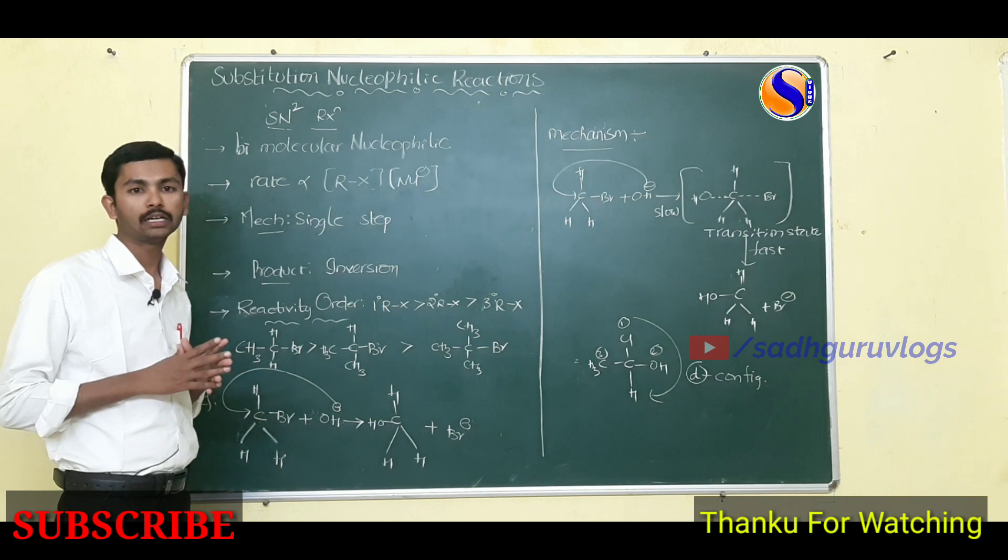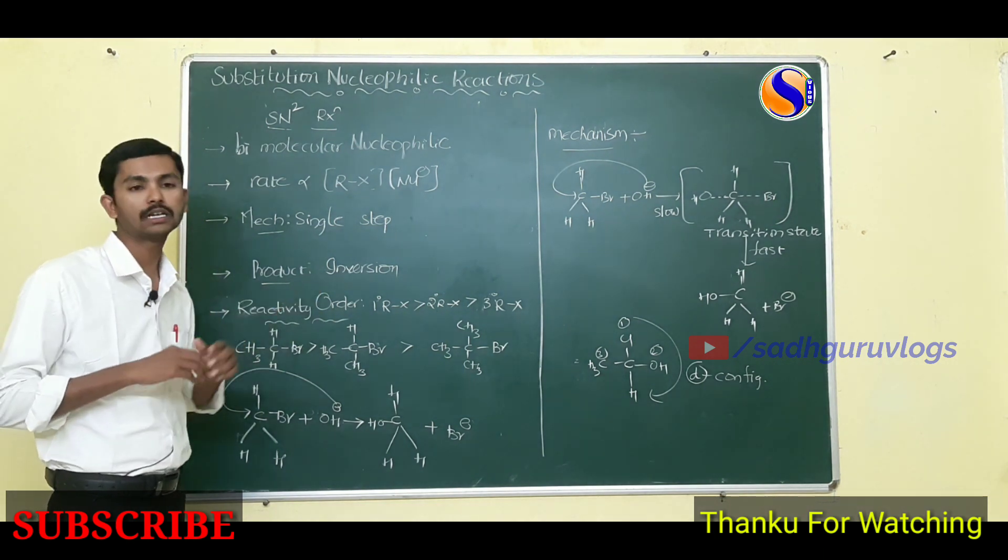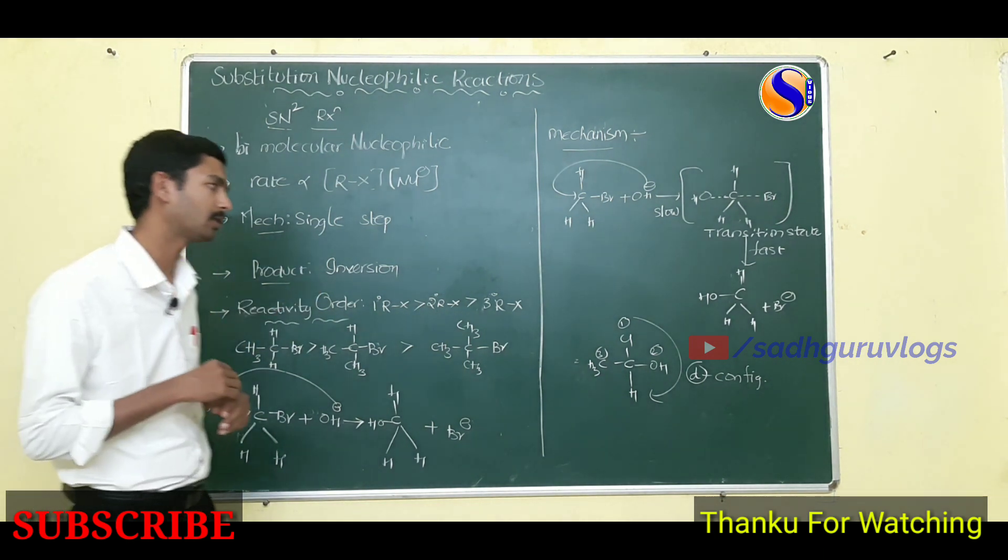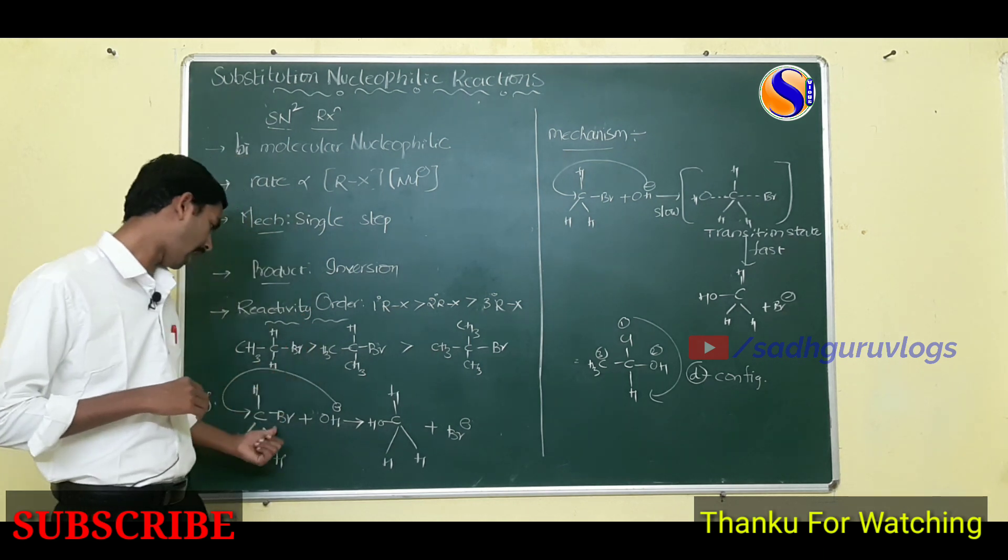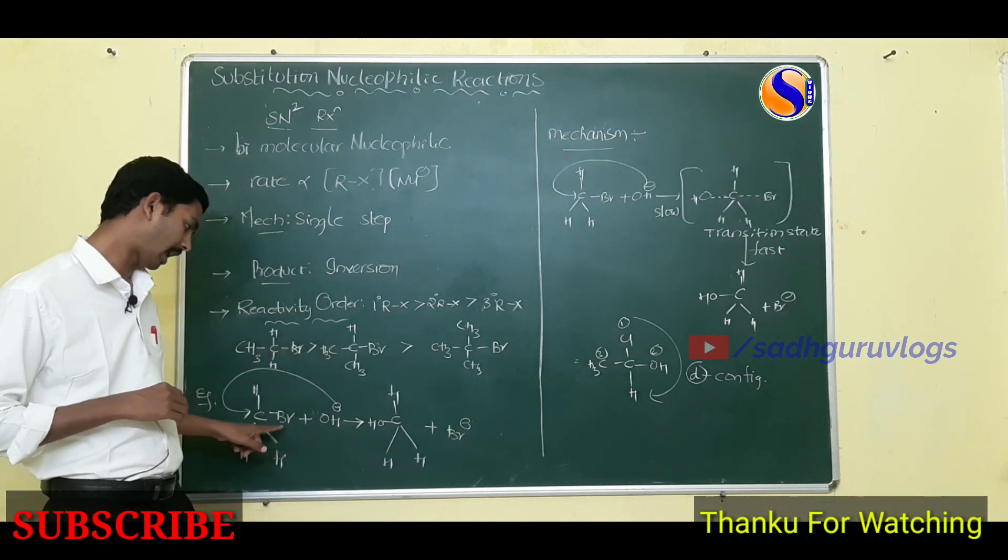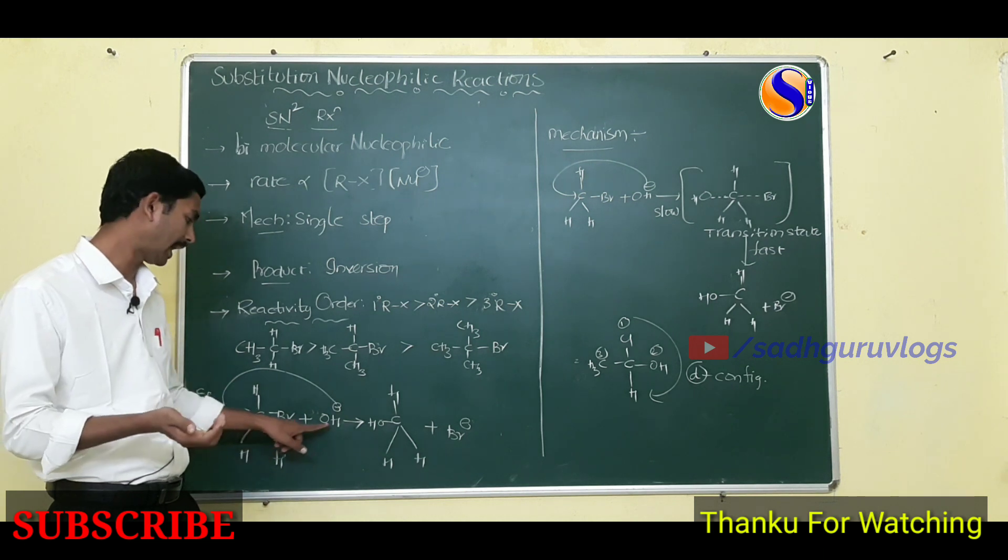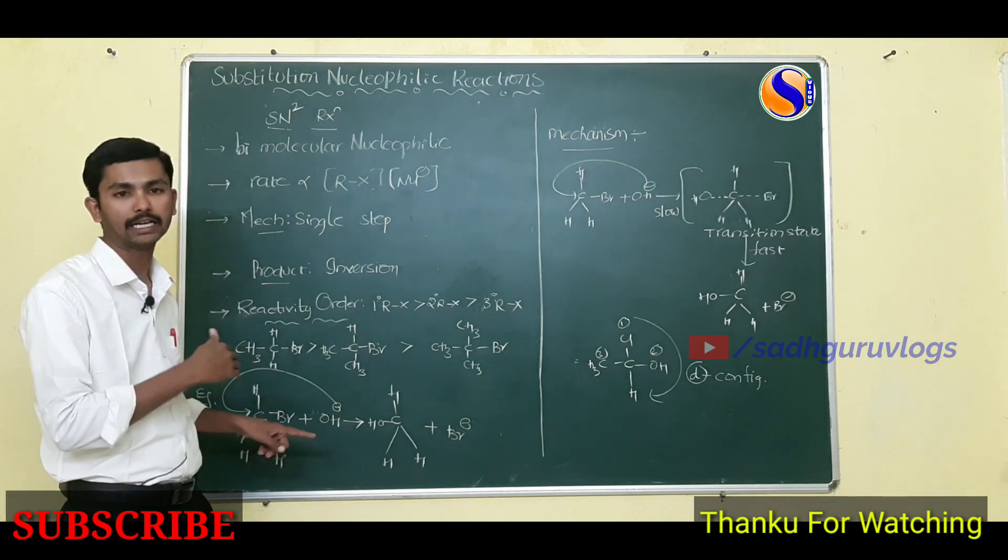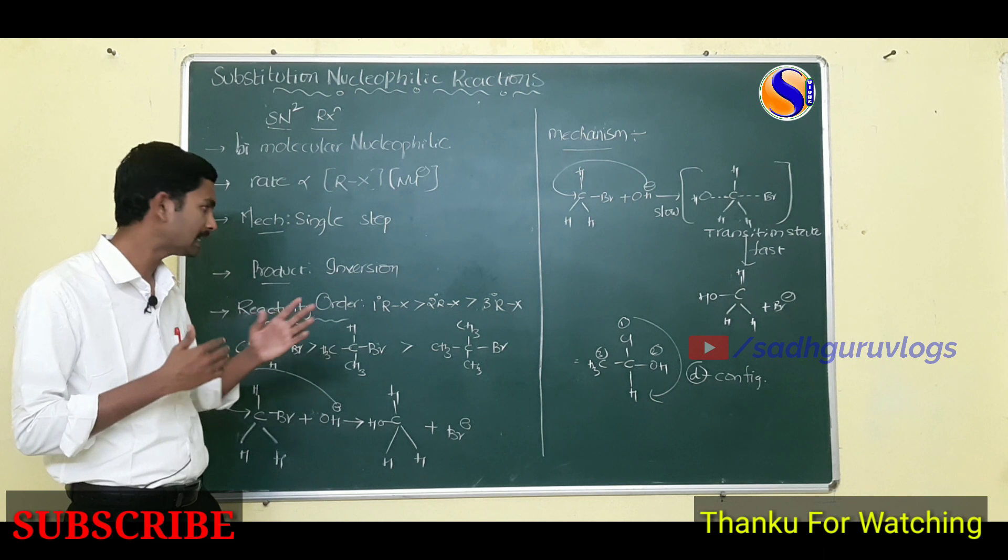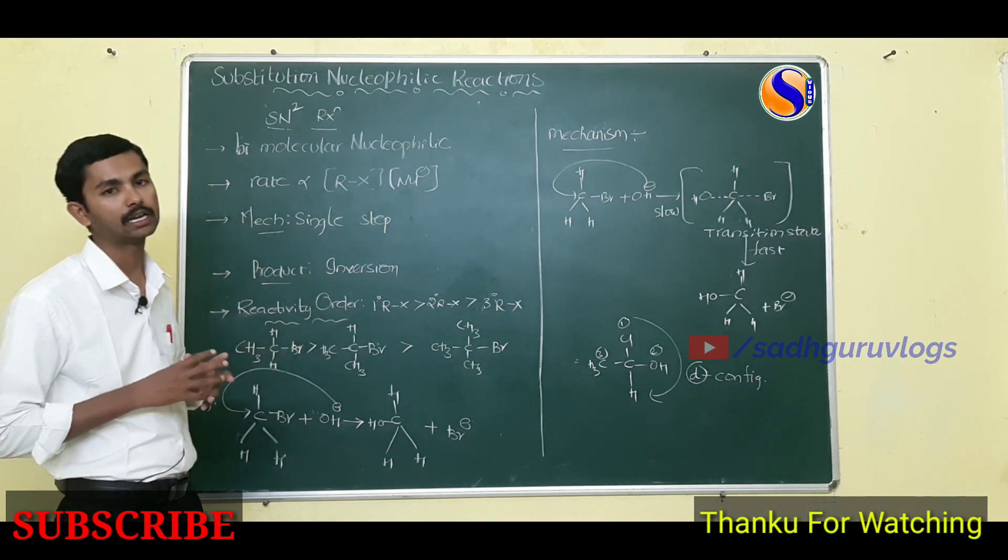In SN2 reaction, the product is inversion product. What is inversion product? In the alkyl halide, the bromine is at right side. The nucleophile attack is from opposite side. That's why the product is inversion in this reaction.